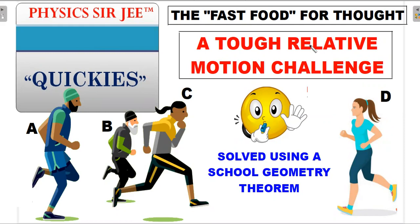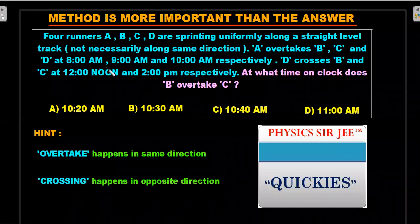We are going to look at an old Olympiad problem in which there are four runners and there is some chasing and meeting happening on a level track. We are going to look at an unconventional way of solving the problem involving one school geometry theorem. I would like you to pause the video here, have a go at the question that is written on the top along with the hint at the bottom. Try to solve it for three to four minutes and do come back for the complete explanation of the problem along with two practice problems on a similar concept.